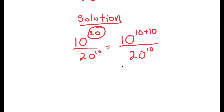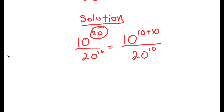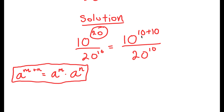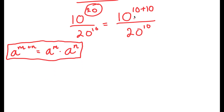The reason I did that is so I can use the property: a to the power of m plus n is equal to a to the power of m times a to the power of n. This is an important property of exponents, and I'm going to use this on 10 to the power of 10 plus 10.